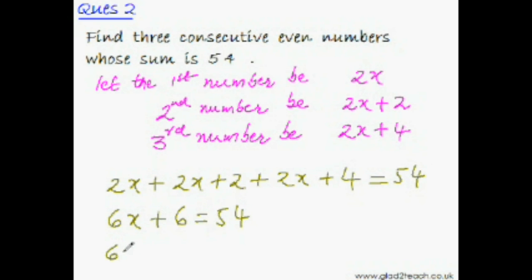2x plus 2x plus 2x equals 6x, and 2 plus 4 is 6, equals 54. So 6x equals 54 minus 6, which is 48. Therefore x equals 48 divided by 6, which is 8. So our first number would be 16, the second even number would be 18, and the third would be 20.